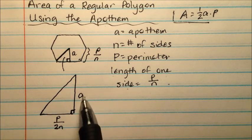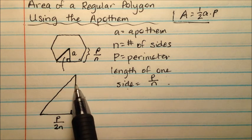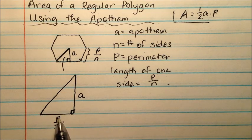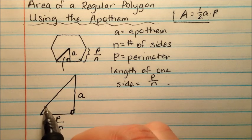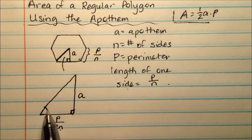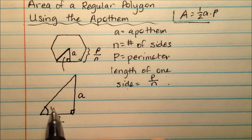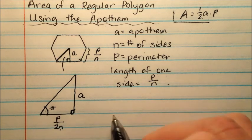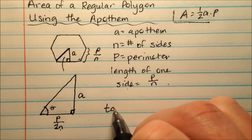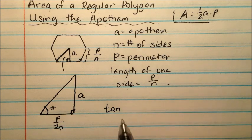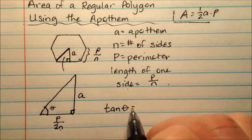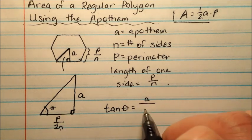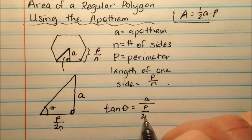So I'm looking at my right triangle here. And I have the apothem is the height and the base is P divided by 2N. I'm going to use a trig ratio for this angle down here that we can call theta. And it's going to combine this side and this side, so the opposite and adjacent. The trig ratio that I'm going to use is tangent. That's going to be the opposite, which is A over the adjacent, which is P over 2N.